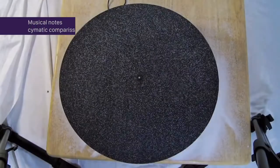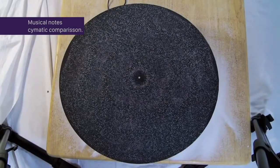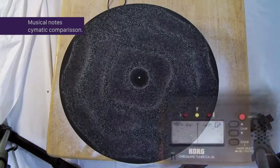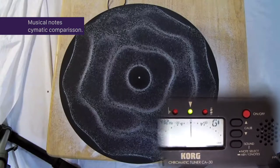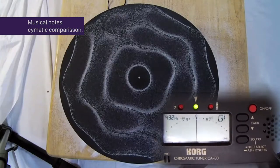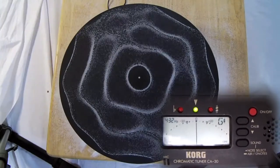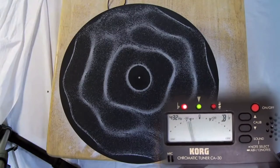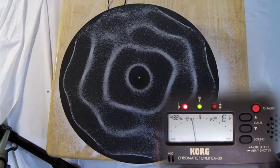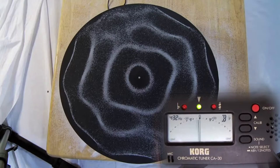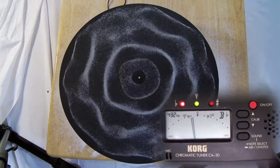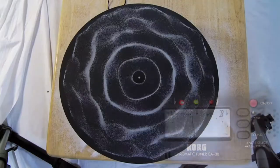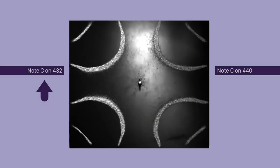This cymatics experiment is used by researchers to visualize related geometric patterns that specific frequencies create. It consists of a speaker playing a frequency underneath a thin metal sheet holding ordinary sand. As you can see, the sand is responding to the sound it is receiving and creating a geometric pattern that is particular to the individual frequency. You will notice that the sand is only creating defined geometric patterns in response to Pythagorean intervals of the 432.